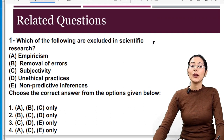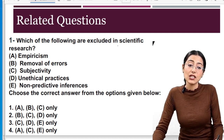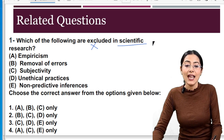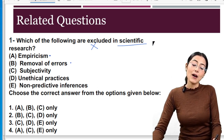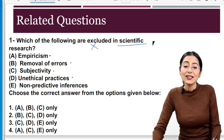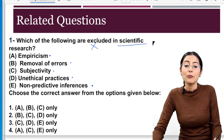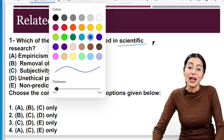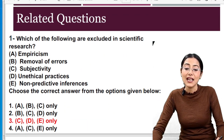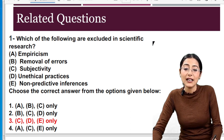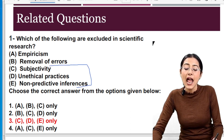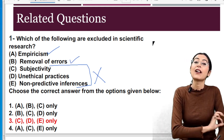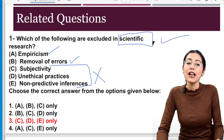Question: Which of the following are excluded in scientific research? The options are: empiricism, removal of errors, subjectivity, unethical practices, and non-predictive inferences. The answer is C, D, and E — subjectivity, unethical practices, and non-predictive inferences will not be used. Empiricism is used and research tries to remove errors. This is the work of scientific research.